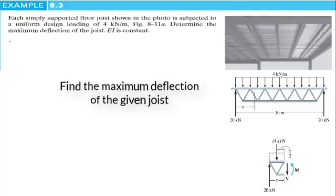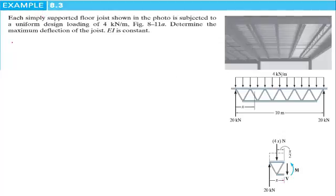Hi everyone and welcome to a new lesson on structural analysis. In this example, we have a floor that is supported by joists. Every joist is simply supported and subjected to a uniform design loading of 4 kilonewtons per meter. We have to determine the maximum deflection of the joist, and EI is constant. The joist is symmetric and the loading is uniform, so the maximum deflection must be at the center.